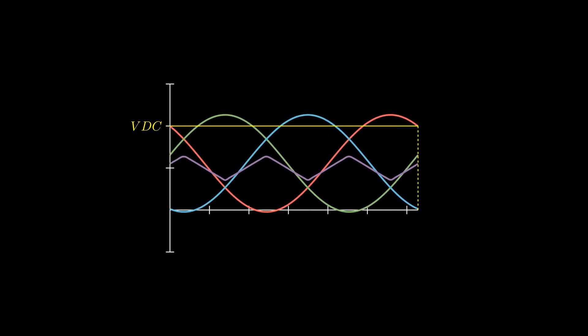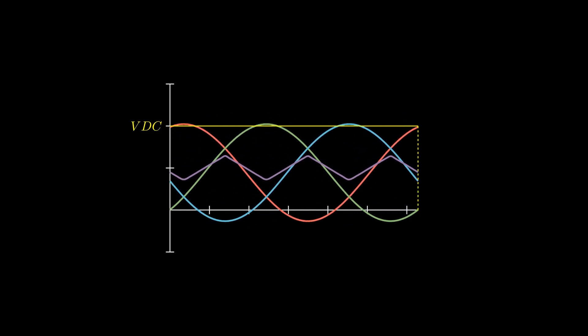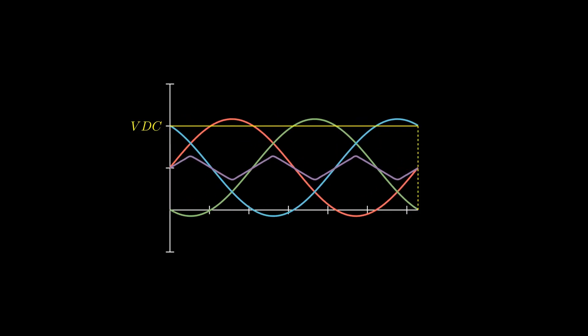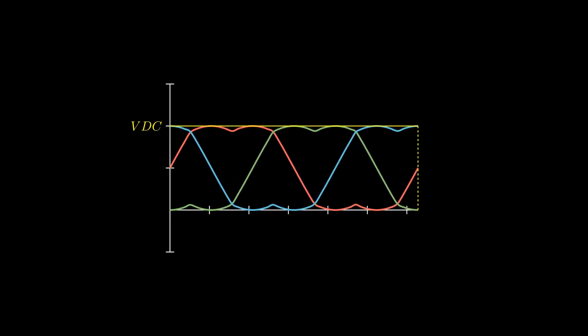This results in the space vector waveform shape, and that is why space vector is more advantageous than the sinusoidal waveform. With the same VDC, we can achieve greater torque with SVPWM. So, how do we apply SVPWM? Let's start by understanding the basics of space vector PWM.